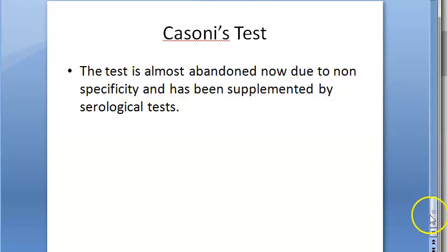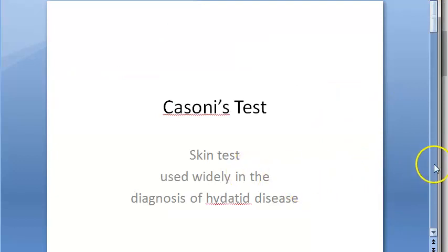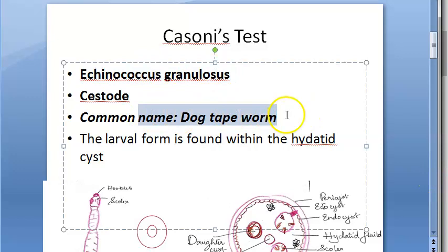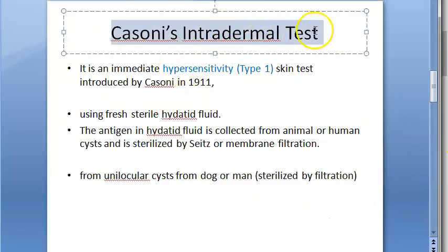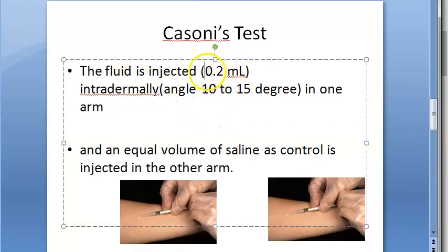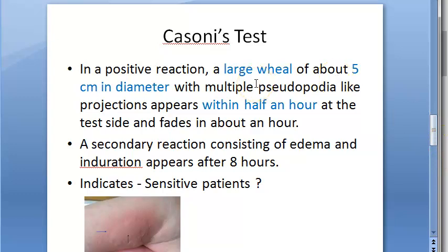In summary, Cassoni's test is a skin intradermal test used for the diagnosis of hydatid disease caused by Echinococcus granulosus, a cestode helminth whose common name is dog tapeworm. It demonstrates type 1 immediate hypersensitivity. The hydatid fluid is collected from the cyst from a dog or man, sterilized by filtration with a Seitz or membrane filter, then 0.2 ml of the purified sterile antigen is injected intradermally at a 10–15 degree angle to raise a bleb into the epidermis, with saline injected into the other hand as a control.